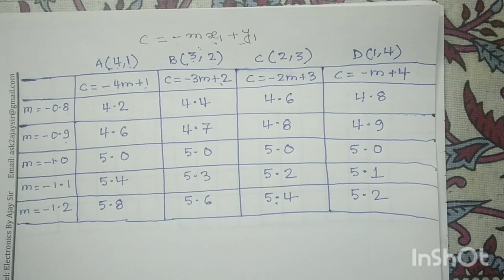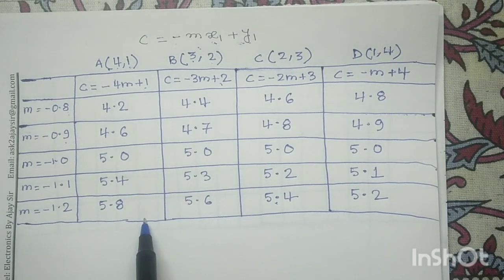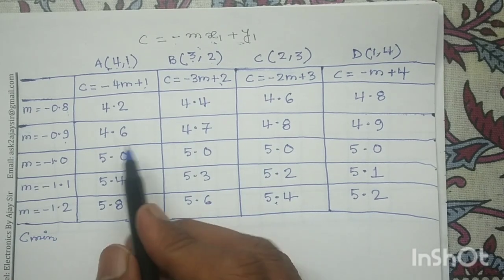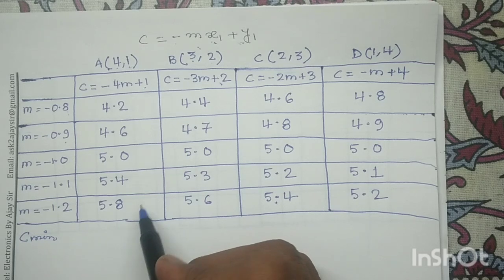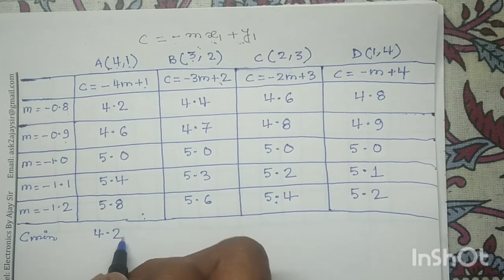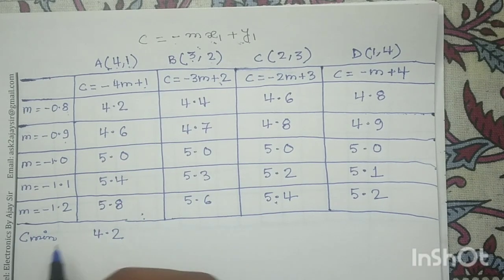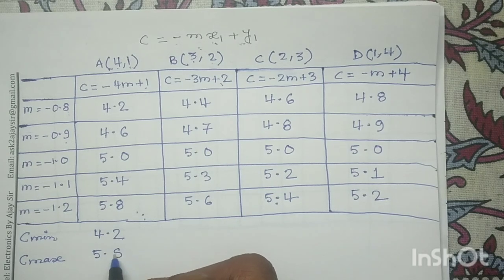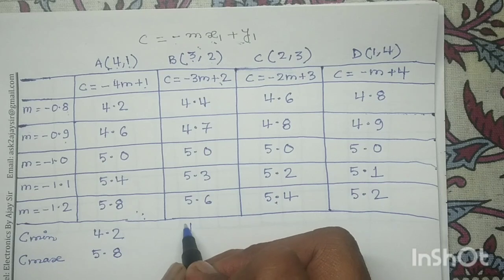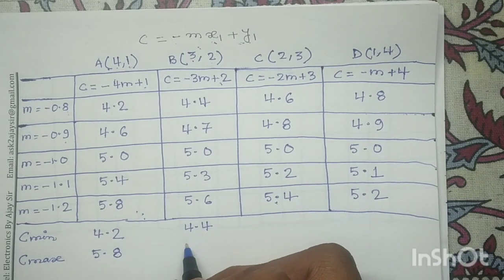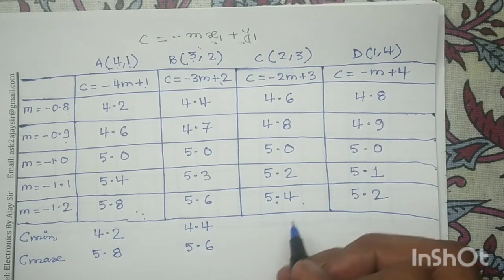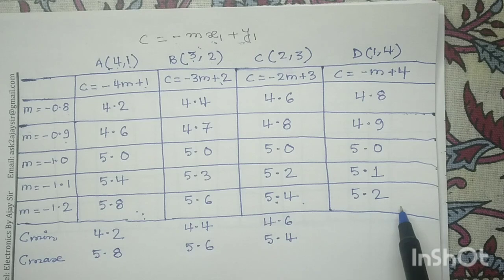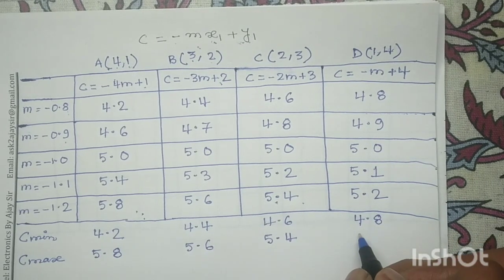After performing this tabular calculation, for each column we write the minimum value of C (C min) and the maximum value of C (C max). For point A's column: C min is 4.2 and C max is 5.8. For point B's column: C min is 4.4 and C max is 5.6. For point C's column: C min is 4.6 and C max is 5.4. For point D's column: C min is 4.8 and C max is 5.2.